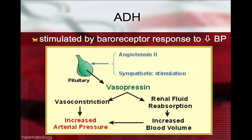Antidiuretic hormone is produced in the pituitary gland and has two effects. It causes direct vasoconstriction on the vessels, increasing arterial blood pressure. Antidiuretic hormone, or vasopressin, also works on the renal tubules to cause water retention, which increases blood volume.